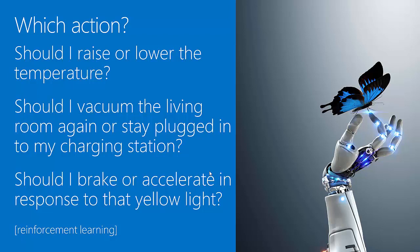Finally, and most relevant for us today, are algorithms that choose actions. In a house, should I raise or lower the temperature? If I'm a robot vacuum, should I visit the living room and clean it again, or stay plugged into my charging station? If I'm the Mars rover, should I turn right, turn left, or move forward? These are all decisions that, when made, change how the system interacts with the world around it. Most commonly, this family of algorithms is called reinforcement learning. They mimic the psychological theory of reinforcement learning, where rewards and punishments shape the decisions we make.